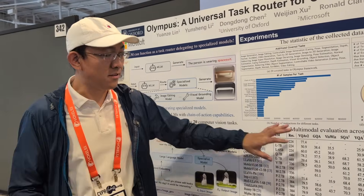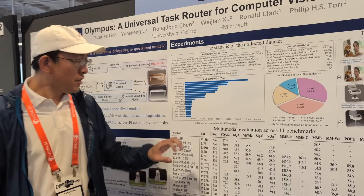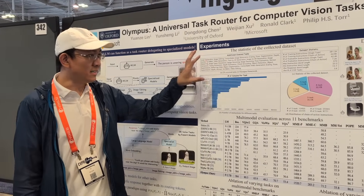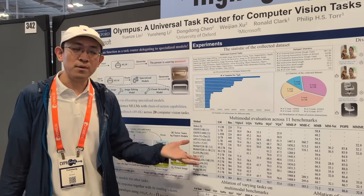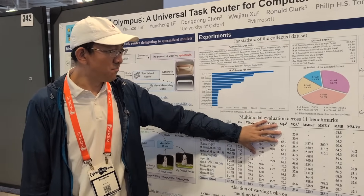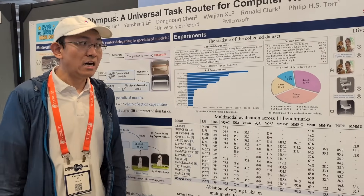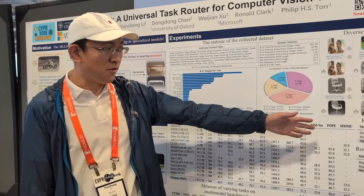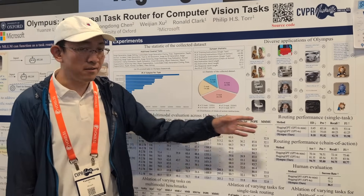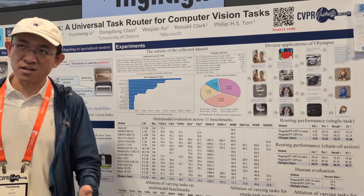We get the results here. For this table, we show that by using our dataset, it does not harm the performance of the models on the standard evaluation benchmarks. On the other hand, we show the routing performance, indicating that our models have more than 91% accuracy to call the experts correctly.